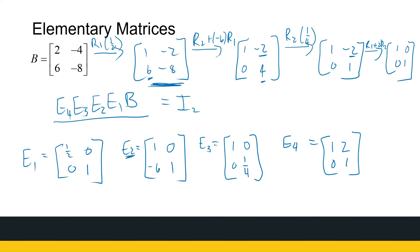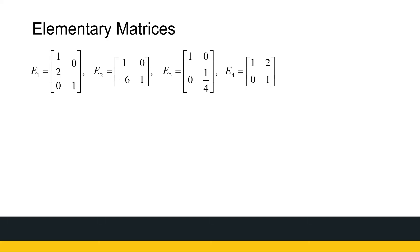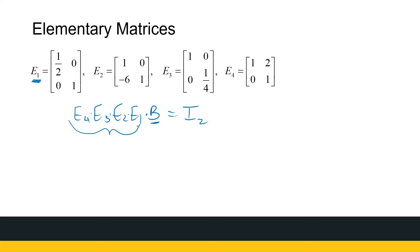Let's rewrite that. We have E4·E3·E2·E1·B = I. Order is important — sometimes matrices can commute, but not always. We first multiplied by E1, then E2, then E3, then E4. Now we see something times B gives the identity, which means that product is B inverse. So B inverse equals E4·E3·E2·E1, written as a product of elementary matrices.